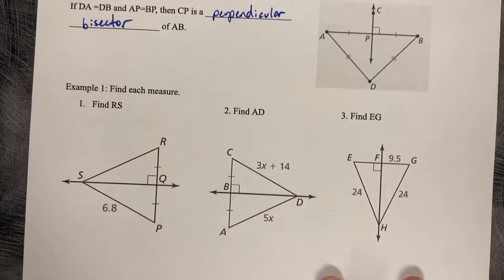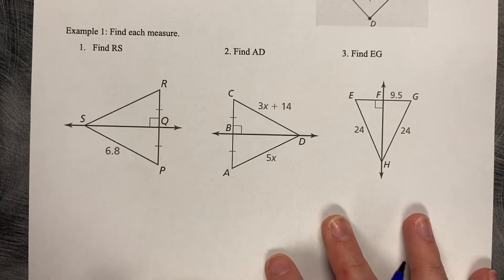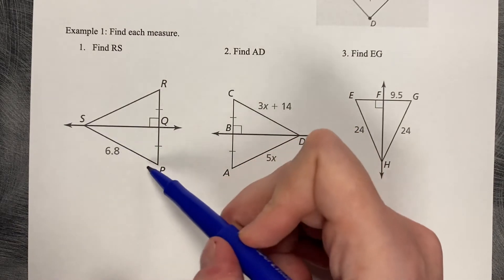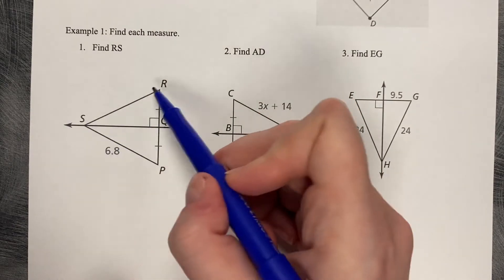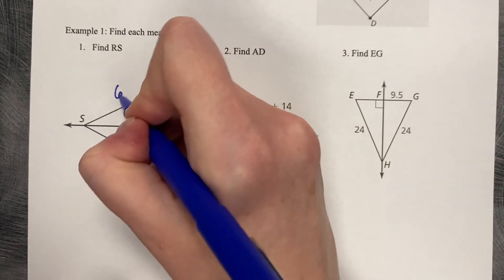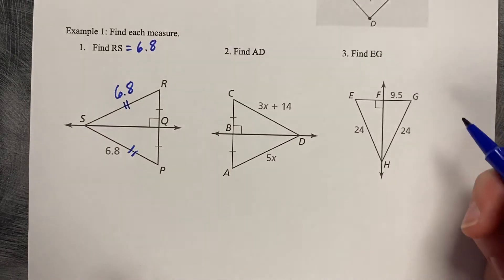Let's find each measure. Here's our three examples. Find RS. So we've got our perpendicular bisector, which means that PS is 6.8, which means that RS must be the same. These two are congruent, so RS equals 6.8.